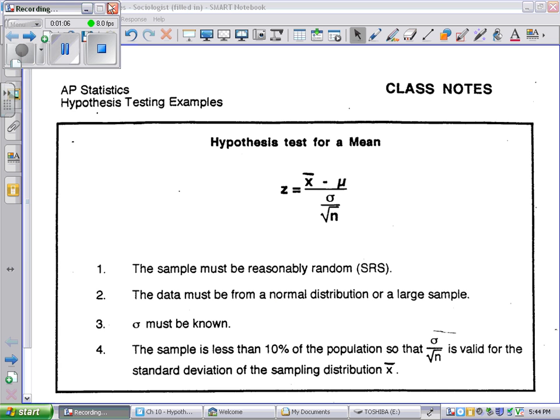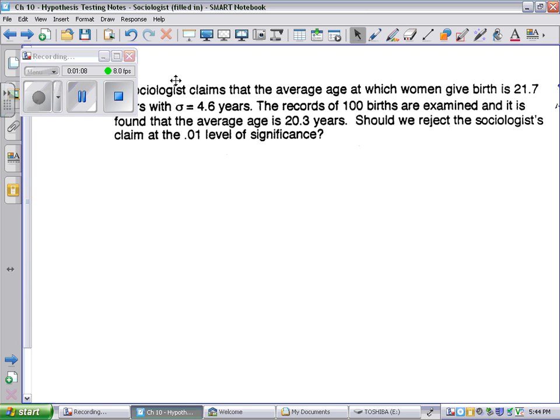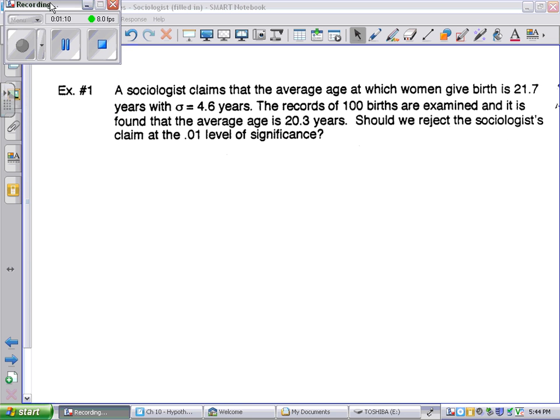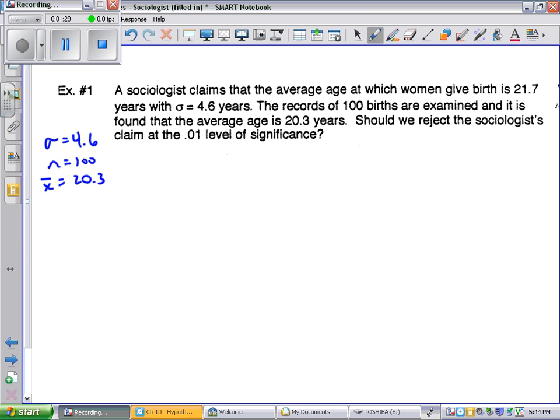Looking at the first question, or the first problem, it says the sociologist claims the average age at which a woman gives birth is 21.7 years, with sigma of 4.6 years. We've got 100 birth records, and so I'm going to write this stuff down. Sigma is 4.6, n is 100, x-bar is 20.3. The claim here is that mu is 21.7.